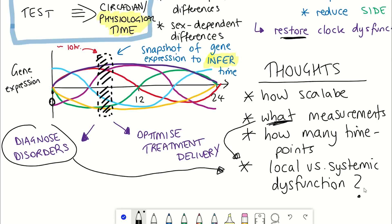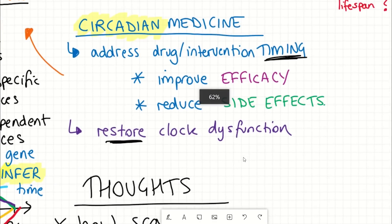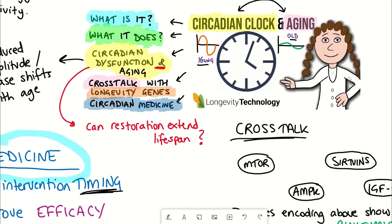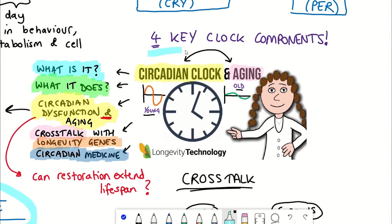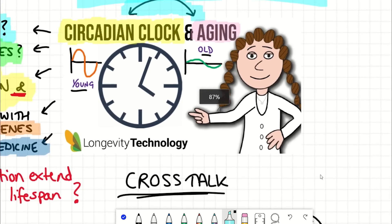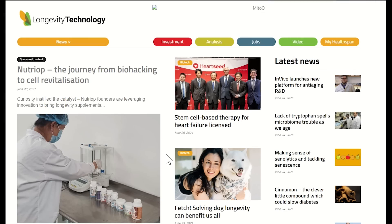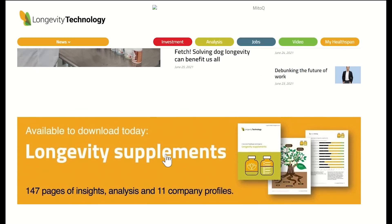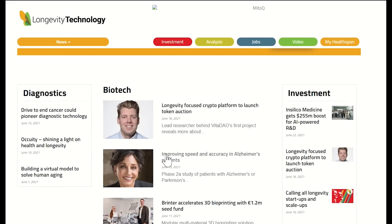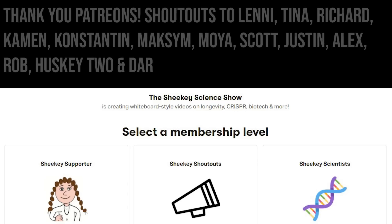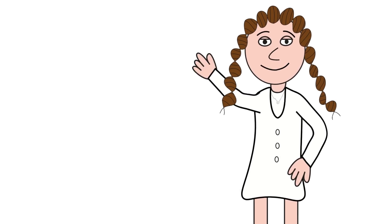With further understanding of the molecular underpinnings and entrainment of circadian clocks in different tissues, we could identify further anti-aging interventions — especially important for those more at risk, such as shift workers. I'd like to thank this week's sponsor, Longevity Technology, which delivers high-quality daily news and insights on research, investments, and technologies that extend health span and lifespan — find the link in the description. I hope you've learned something about circadian rhythms, and thank you to my Patreon supporters for listening.